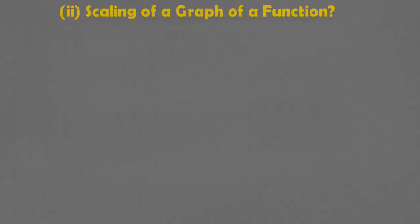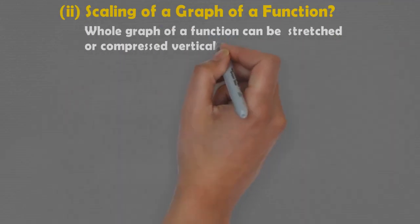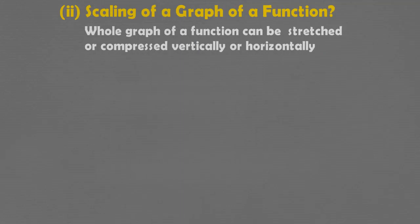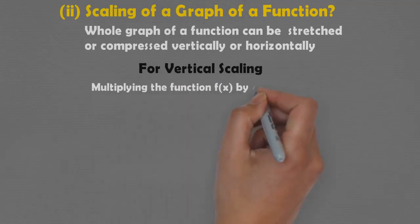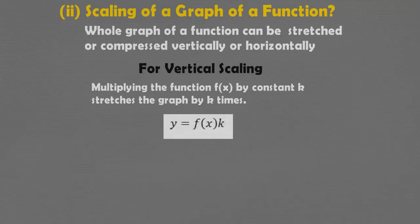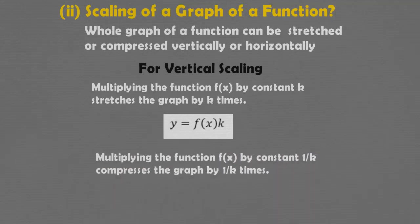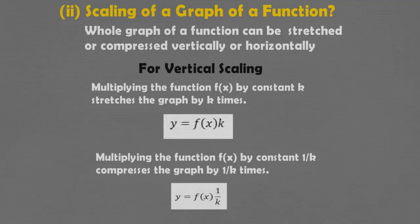Scaling of a graph means that the whole graph of the function can be stretched or compressed vertically or horizontally. For vertical scaling, multiplying the function f(x) by k stretches the graph by k times, that is y = f(x) · k. Similarly, multiplying the function by 1/k compresses the graph vertically by k times, that is y = f(x) · (1/k).